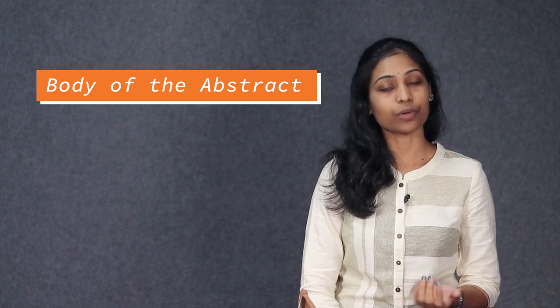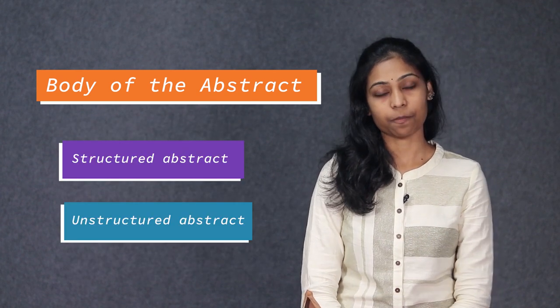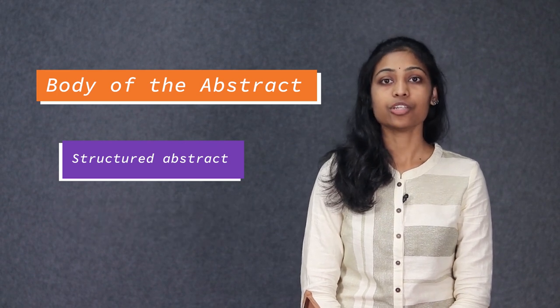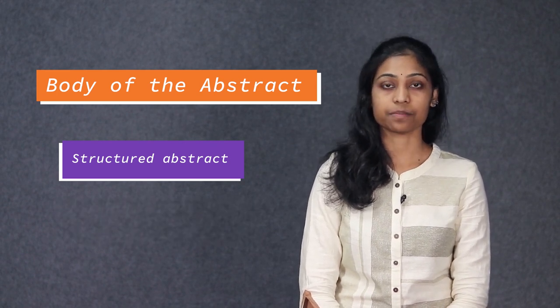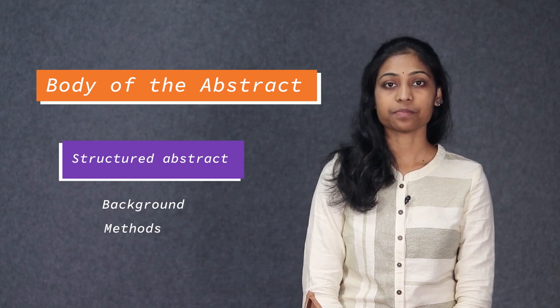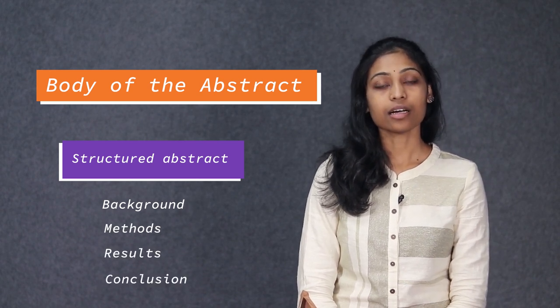Abstracts can be of two types: Structured and unstructured. A structured abstract usually contains four sections: Background, methods, results and conclusion.